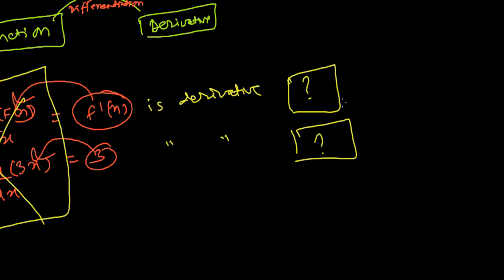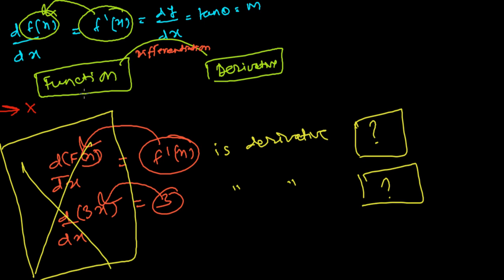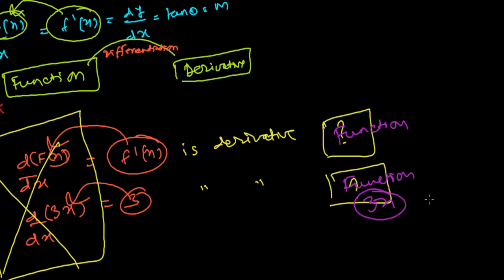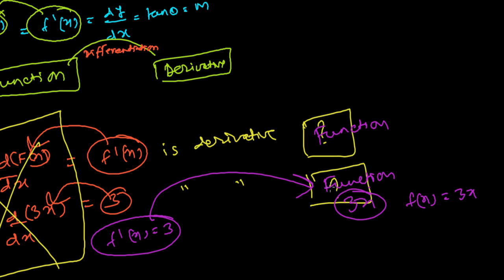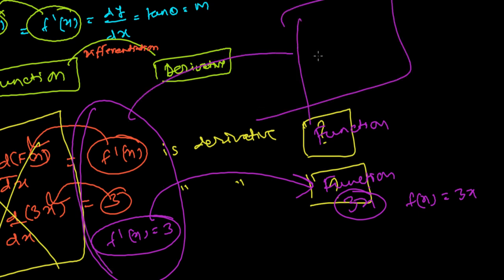You get a derivative only when you differentiate a function, so there must be some function whose derivative is 3. We know that 3 is the derivative of 3x. So if f(x) = 3x, then f'(x) = 3. The process of finding that original function from its derivative is called integration.